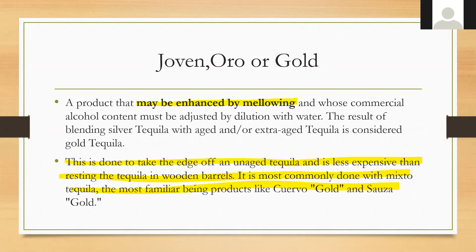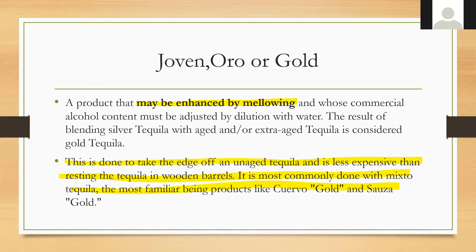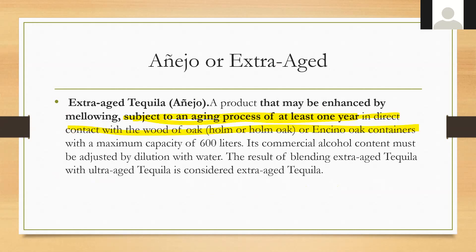Then you find joven, oro, or gold — this product can be enhanced by mellowing through adding simple syrups, caramel coloring, or other things to take the edge off unaged tequila. It's less expensive than resting in barrels and most commonly done with mixto styles — think Cuervo Gold or Sauza Gold. Reposado means 'rested' or 'aged' — aged at least two months and up to about 11 months in direct contact with oak. Añejo is aged at least one year in oak up to three years, in containers with a maximum capacity of 600 liters. Extra aged is the result of blending extra aged with ultra aged tequila. Ultra aged must be aged at least three years, maximum 600-liter containers, and diluted with water only.